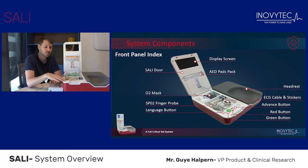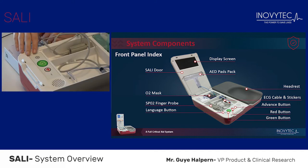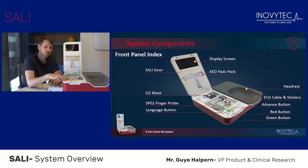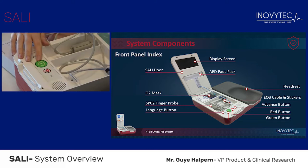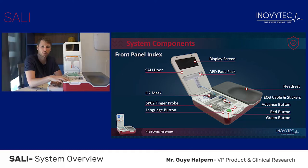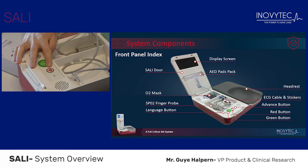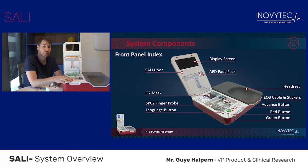The keypad has four different keys. The first is the language key, used to change languages — you can have as many languages as you want in every device. The next is the CPR protocol initiation button; press the green button to initiate the CPR protocol. The next button is the shock button — once SALI decides a shock is needed, you will press the red button when instructed.